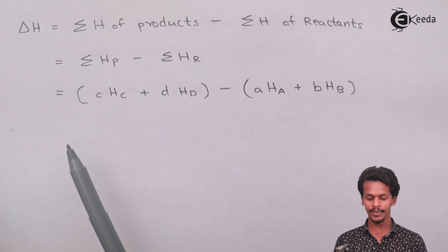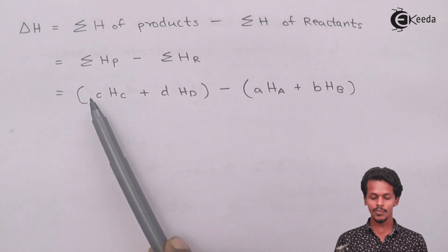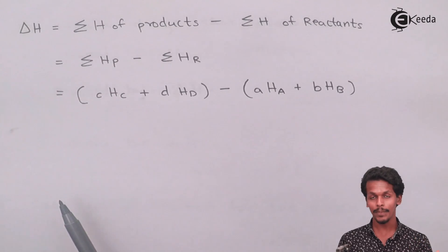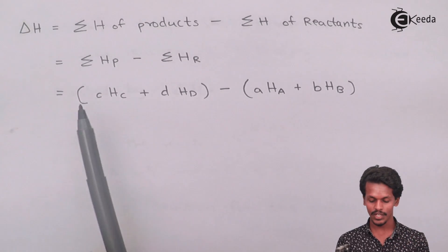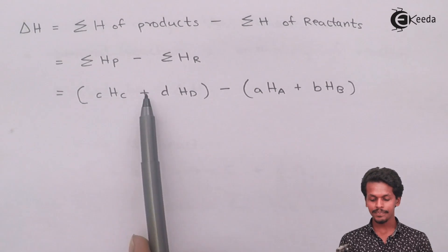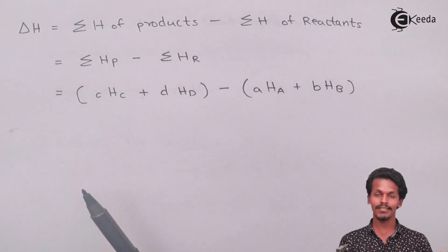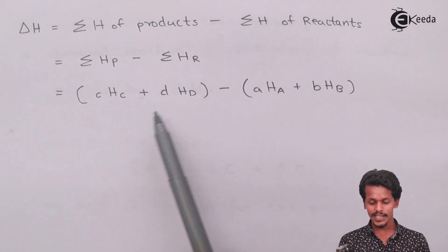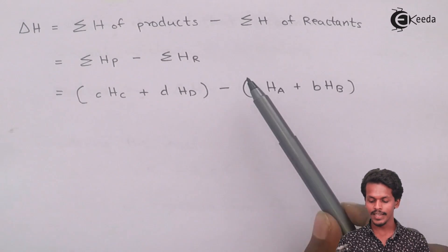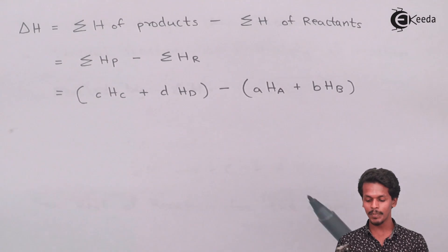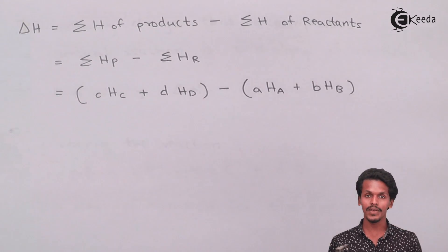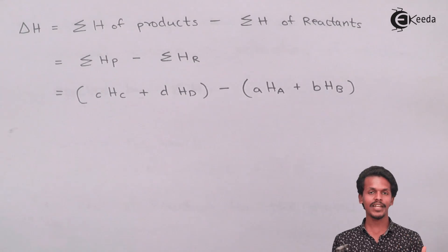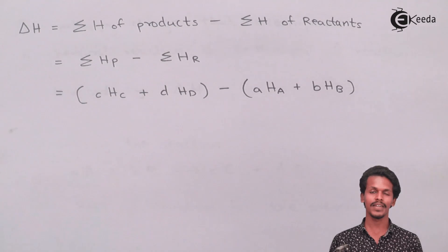Since the product side has 'c' moles of C and 'd' moles of D, the stoichiometric values are multiplied by the respective enthalpies: delta H = (c × H_C + d × H_D) − (a × H_A + b × H_B). This subtraction gives the enthalpy of the reaction.